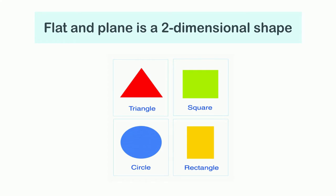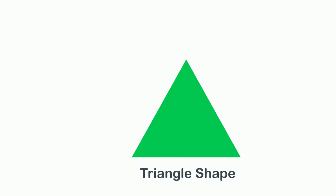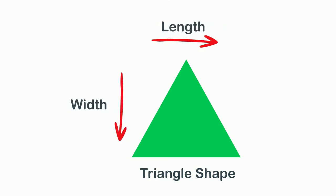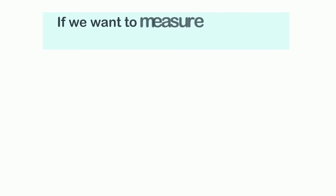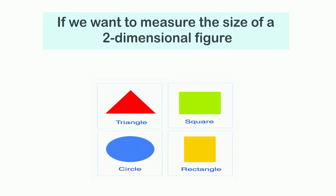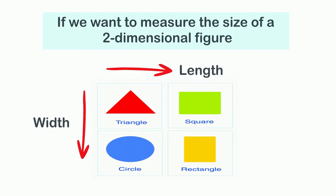The short form of two-dimensional is 2D. It is called two-dimensional or 2D because it has only two dimensions to its shape — that is length and width. So if we want to measure the size of a two-dimensional figure, we have to know the size of its length and width. In simple words, we can call them plain shapes or plain figures.